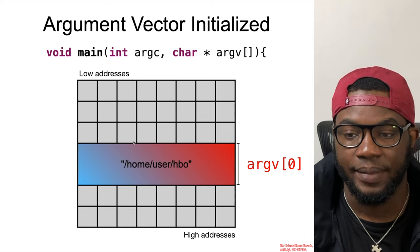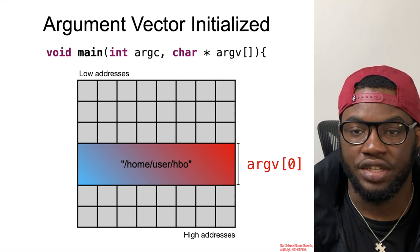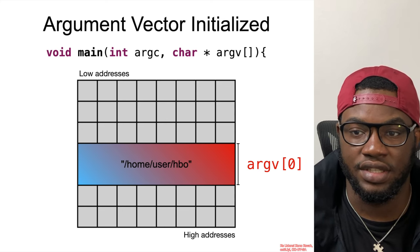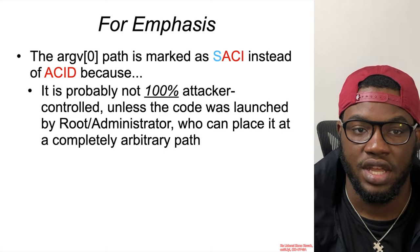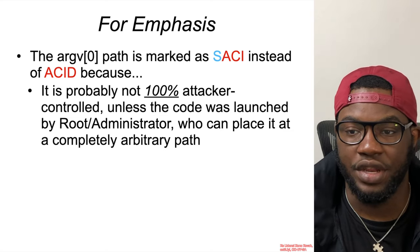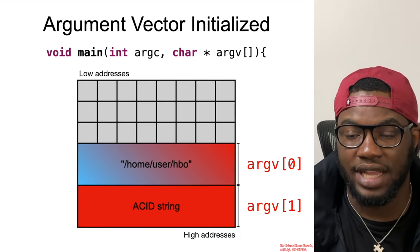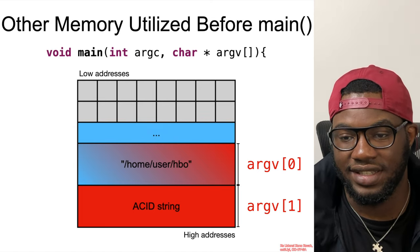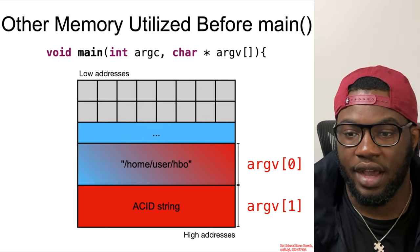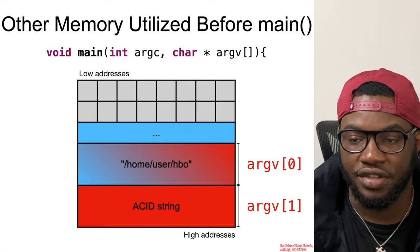What does that look like? Argument zero contains the path to the program, which is potentially less attacker-controlled unless executed by an admin with the privilege to place the program at an arbitrary location on the path. The arguments are passed on the stack, and we're going to use three dots to demarcate the stack versus the heap. In reality, that range is a lot wider, but for this example this should suffice.